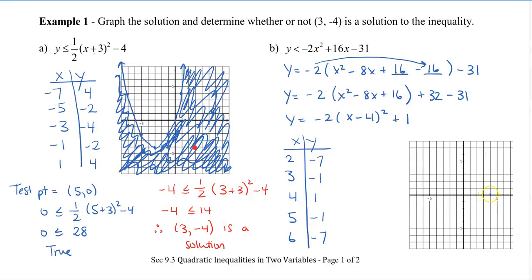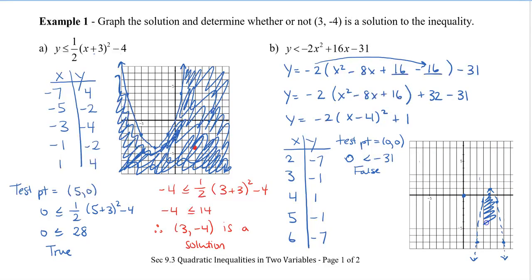I'm going to graph my 5 points. There's been a stretch and a reflection because of the negative coefficient. When I put in x = 2: 2 minus 4 is -2, (-2)² is 4, times -2 is -8, plus 1 gives -7. I'll fill in the other points similarly. Because the inequality is strict less than, I'm going to use a dashed line since it doesn't include the points on the parabola. My test point is (0, 0): plugging in gives 0 < -31, which is false. Since (0, 0) is false, we shade the other side — the inside of the parabola.